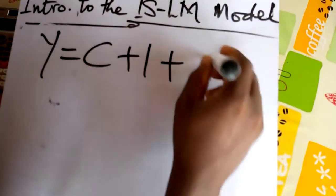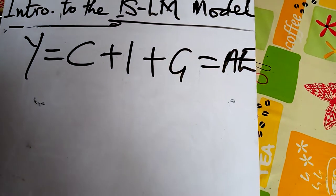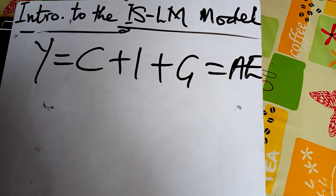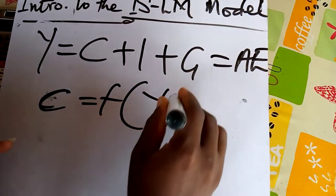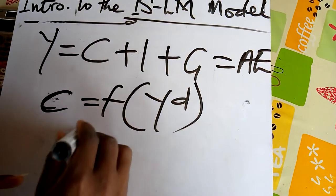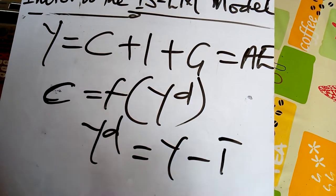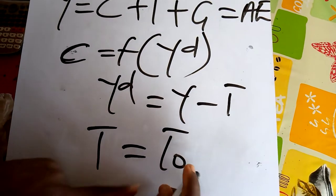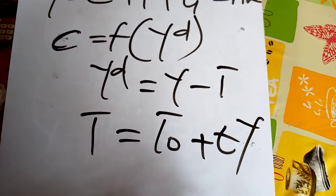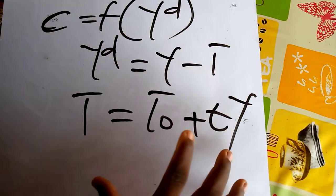Our income equals consumption plus investment plus G, which equals aggregate expenditure. Consumption C is a function of disposable income, and disposable income equals income minus tax. Tax also sometimes has autonomous components: T equals T-naught plus tY.